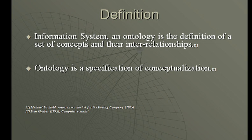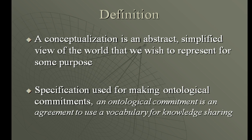In information systems, ontology is the definition of a set of concepts and their interrelationships. This definition is really relevant and important to us. It is also defined as a specification of conceptualization. Conceptualization is an abstract, simplified view of the world that we wish to represent for some purpose. That specification is also used for making what we call an ontological commitment — a common language used by computer agents to make it easier for them to communicate, to exchange information, and to create new knowledge.